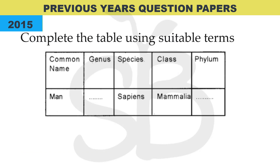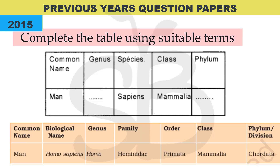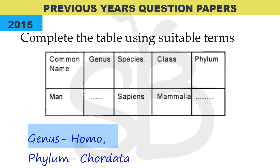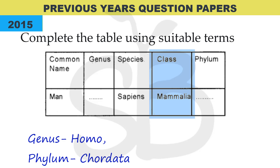From the 2015 annual exam: 'Complete the table using suitable terms.' This table is directly asked from the textbook. The scientific name of a human is Homo sapiens — Homo is the genus name and sapiens is the species name. So the genus is Homo and the species is sapiens. The class is Mammalia.